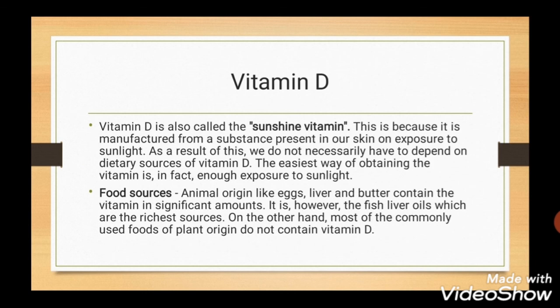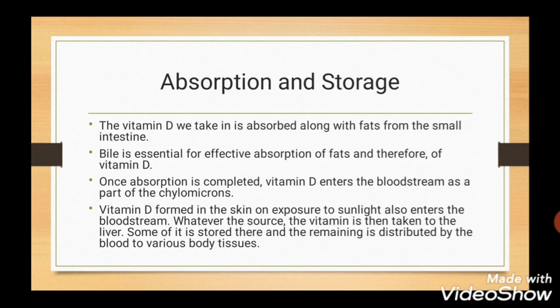Vitamin D is also called the sunshine vitamin because it is manufactured from a substance present in our skin on exposure to sunlight. As a result, we do not necessarily have to depend on dietary sources of Vitamin D. Food sources of Vitamin D include eggs, liver, butter, and fish liver oils. Foods of plant origin do not contain Vitamin D. Vitamin D is absorbed along with fats from the small intestine, and since bile is essential for effective fat absorption, bile is necessary for proper absorption of Vitamin D as well.